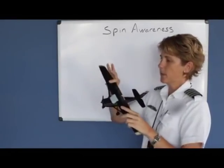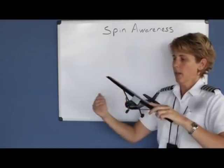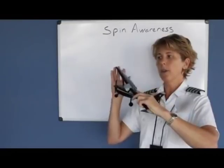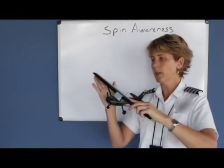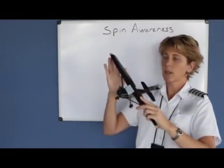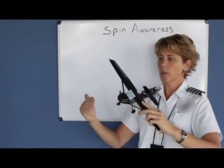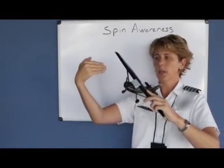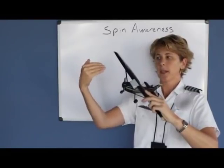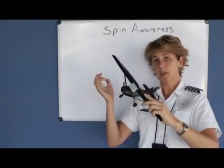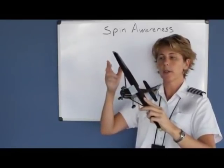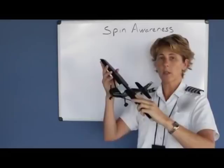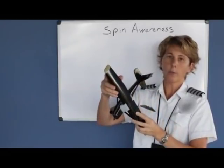The upper wing stalled because we met the critical angle of attack, but because it moved faster through the air and generated a little bit of lift, it caused the wing to rise. When the wing rose, it changed the relative wind — it shifted, and that helps it produce more lift. But because the lower wing is very deeply stalled and the upper wing is still stalled, it creates a roll-over motion.